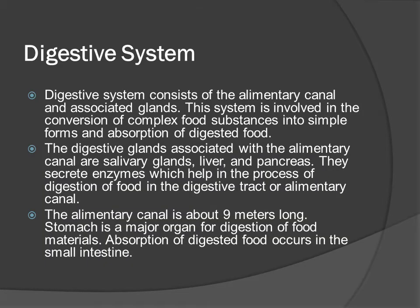The digestive system consists of the alimentary canal and associated glands. The system is involved in the conversion of complex food substances into simple forms and absorption of digested food. The digestive glands associated are salivary glands, liver and pancreas. They secrete enzymes which help in the process of digestion. The alimentary canal is about 9 meters long. The stomach is a major organ for digestion and absorption of digested food occurs in the small intestine.